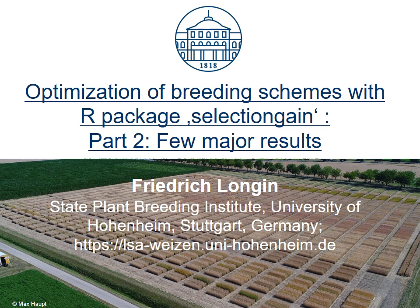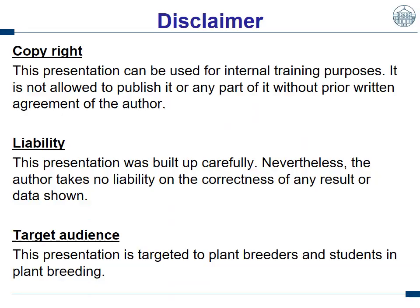My name is Friedrich Longin and I am the Head of the Wheat Breeding Research at the University of Hohenheim, where we do a lot regarding the optimization of breeding programs.